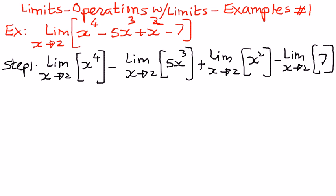All we have done here is take the function — which happens to be a polynomial function — and split it up into smaller individual pieces. We wrote out the given limit as individual functions, and therefore we can now simplify this operation.